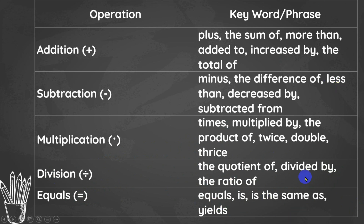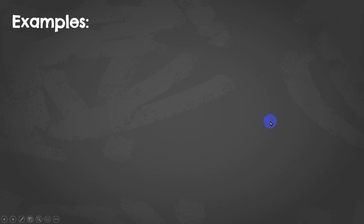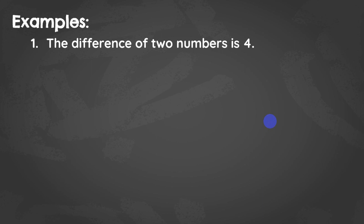These keywords will help us translate sentences into mathematical equations. For example number one: 'the difference of two numbers is four.' Write your answer on your notebook. The correct answer is x minus y equals 4. Two numbers are involved so we use two variables. When we say difference, the operation is subtraction. When we read 'is four,' that means equals to four.